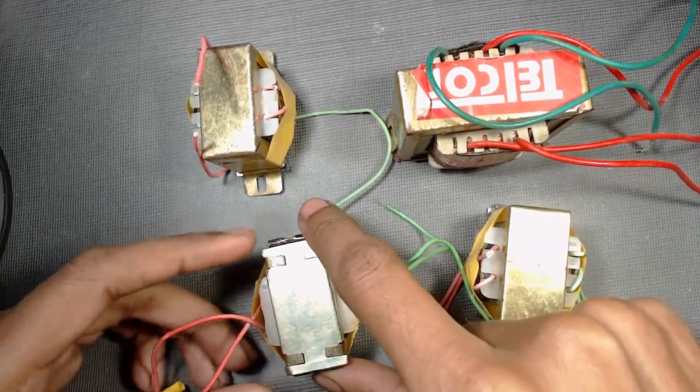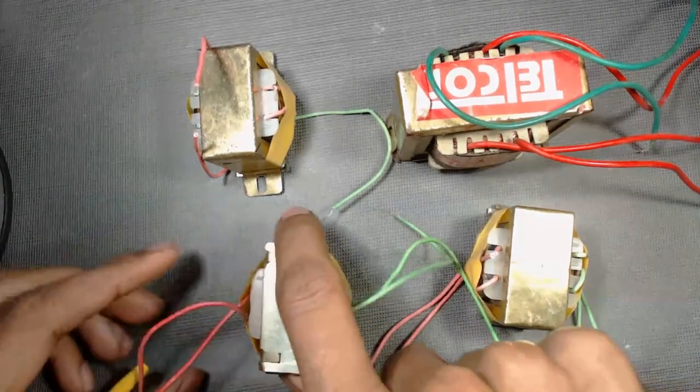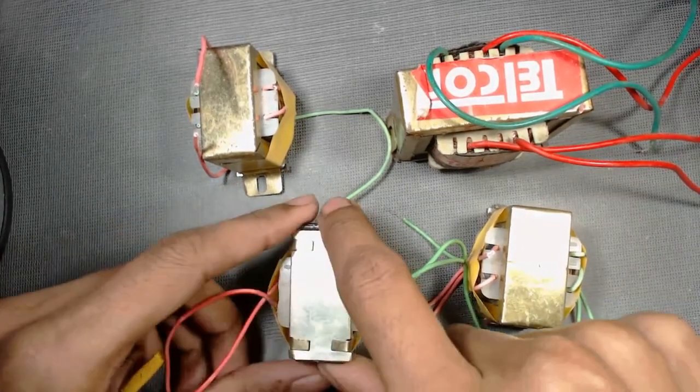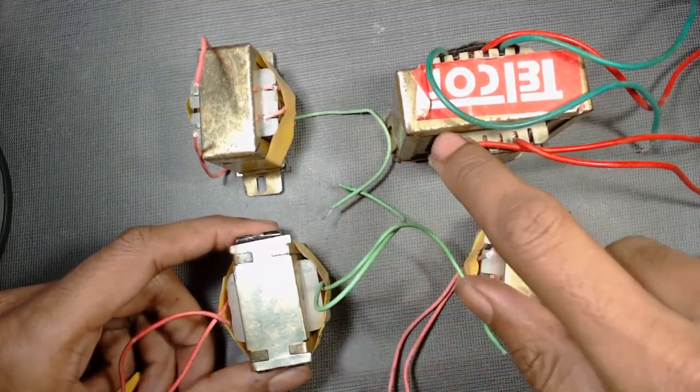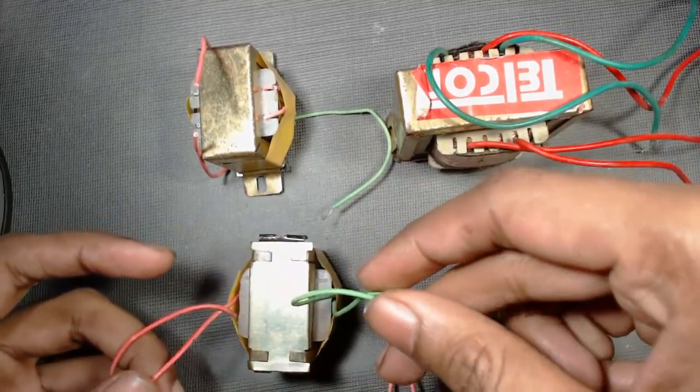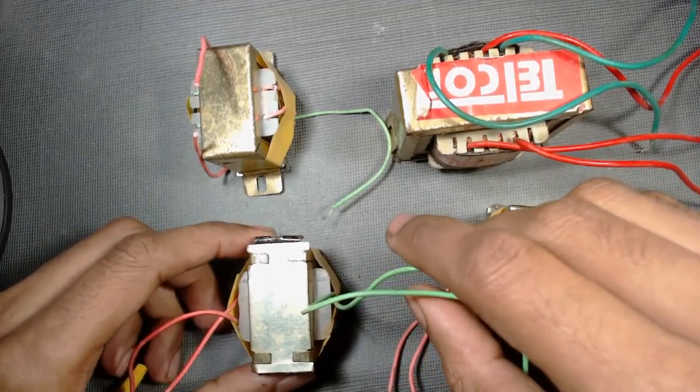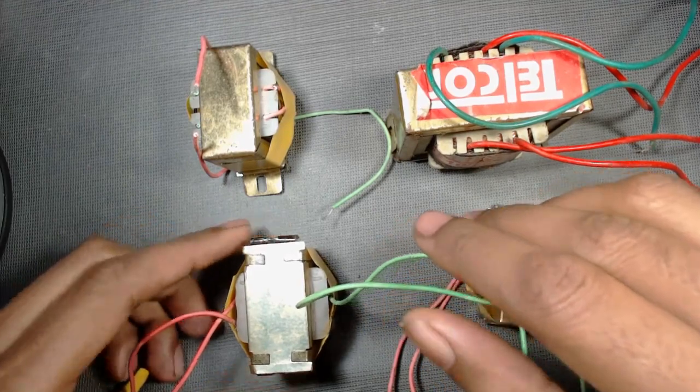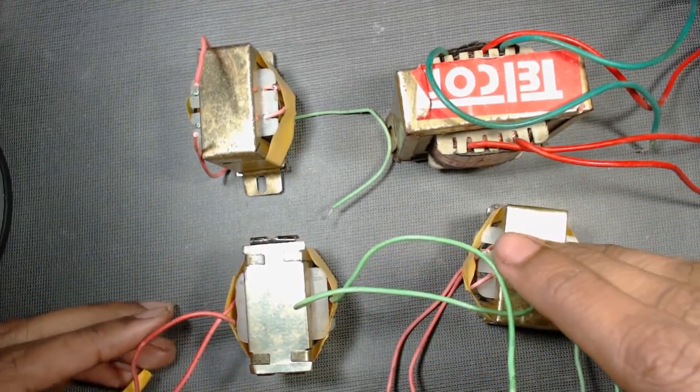Generally, the wires of primary side of most of the transformers are colored with red. But sometimes it may not happen. We can identify it by measuring the resistance of the wires of these transformers. If you don't know how to do that, you can watch our video on how to identify primary and secondary sides of a transformer.